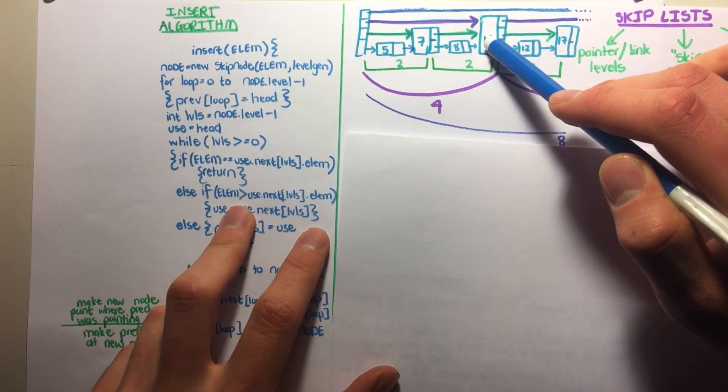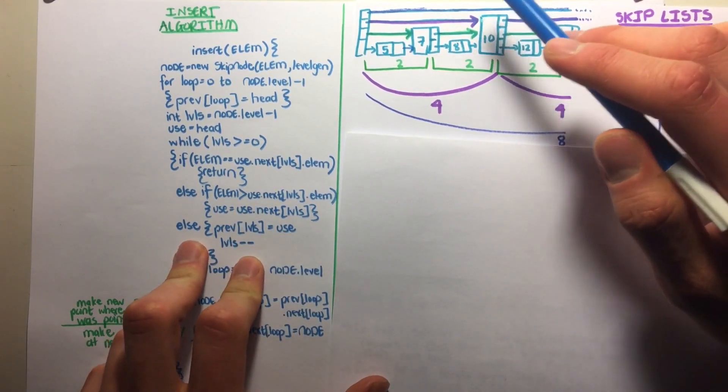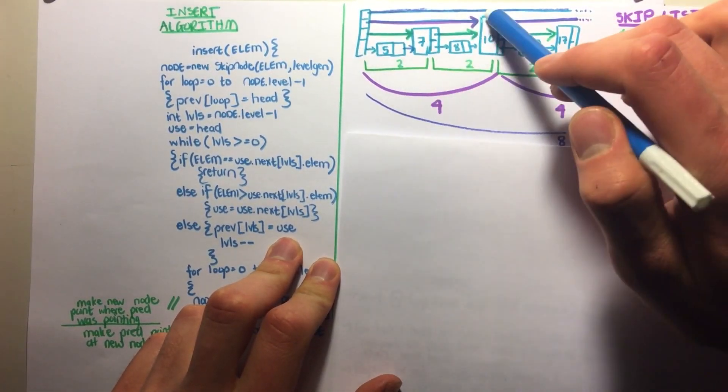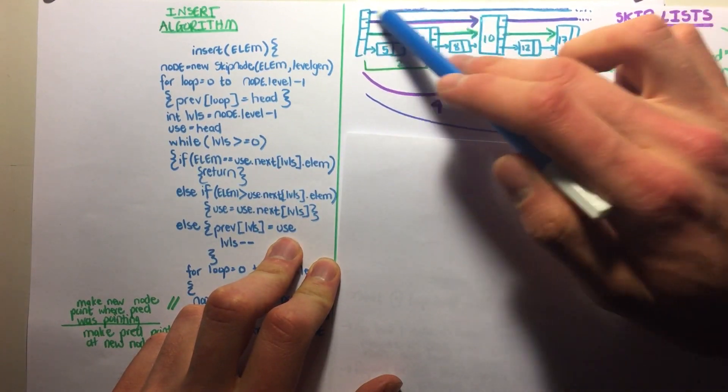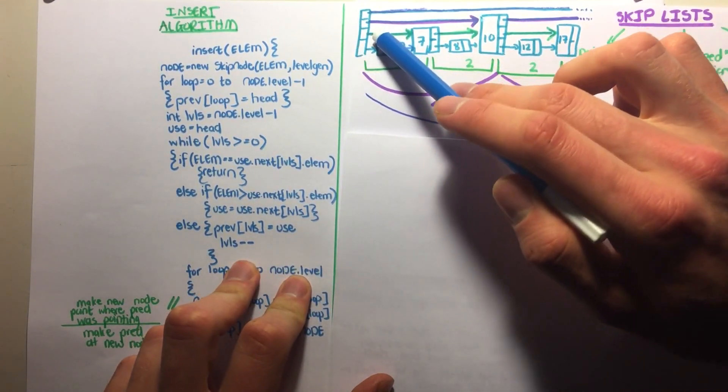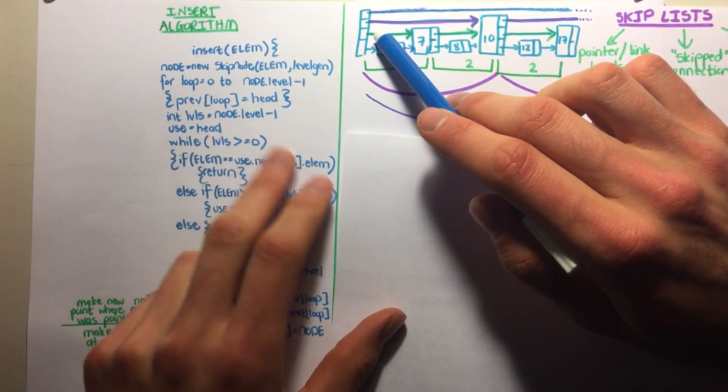Else if the element is bigger than 10, which it is not. Else we say the previous at that level is assigned to use. Remember, this was use dot next, so this will be the previous of 9 at this level. Then we go down one level, levels minus minus, and restart.